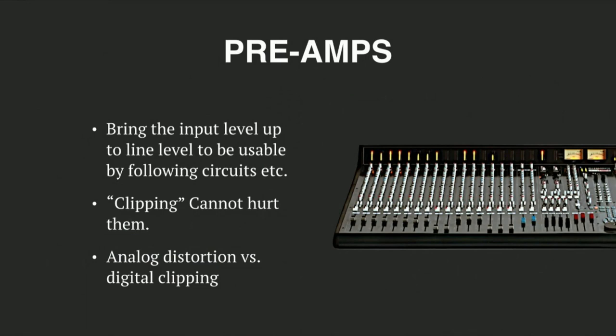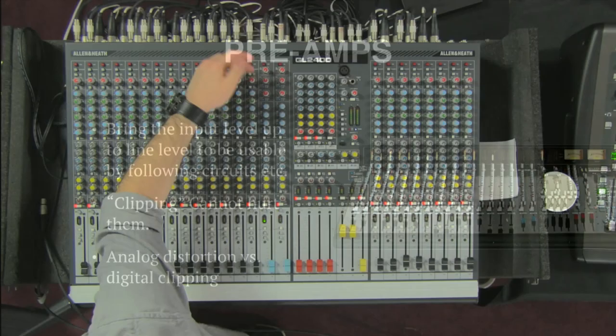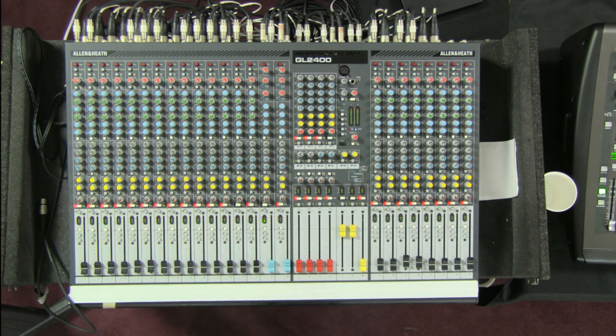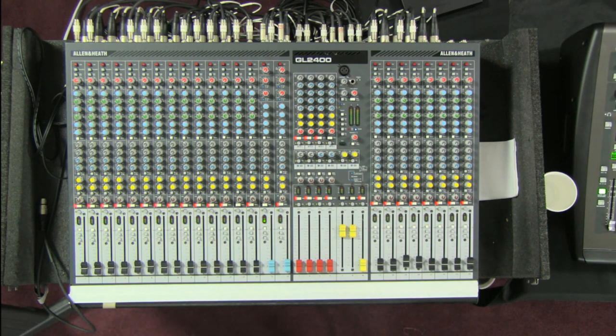We're going to talk about preamps now. The first thing in that chain is the preamp. Basically at the very top of any soundboard, you will see the gain knob, and what it's controlling is a preamp. We call it a preamp because it is basically amping up whatever signal is plugged into it pre of all the processing. The goal of a preamp is bringing the input level up to line level to be usable by the circuits that follow it. If you were to plug a microphone directly into a speaker without a preamp, you're not going to hear it because it's not outputting enough power on its own.